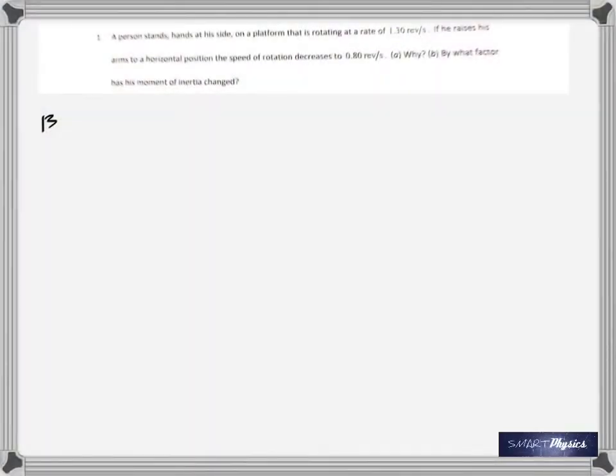I tried to put the questions on right now because it was done in a hurry. This question says a person stands, hands at his side, on a platform that is rotating at a rate of 1.30 revolutions per second. He raises his arms to a horizontal position. The speed of rotation decreases to 0.80 revolutions per second. Why? The first part says why does it decrease, and your answer should be because his rotational inertia increases.